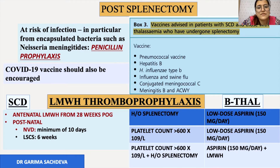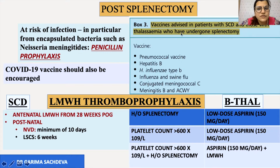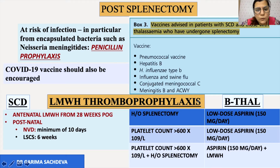Some patients with beta thalassemia and sickle cell disease have had splenectomy. These patients are at high risk of infection by encapsulated bacteria like Neisseria. They should be given penicillin prophylaxis and vaccines including pneumococcal, hepatitis, Haemophilus influenzae B, influenza, swine flu, conjugated meningococcal C, meningitis B and ACWY, and COVID vaccine.